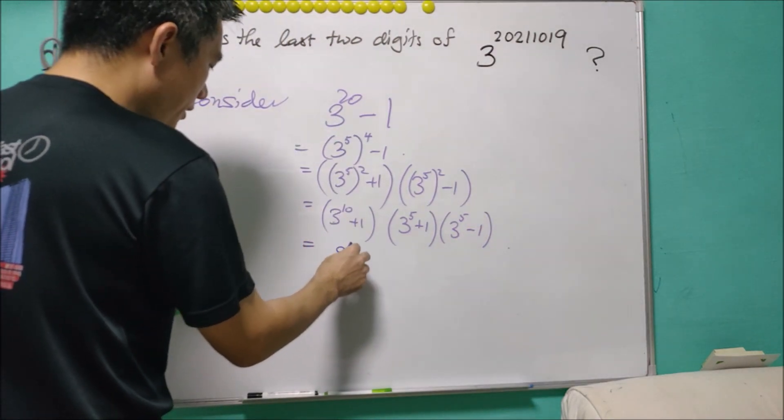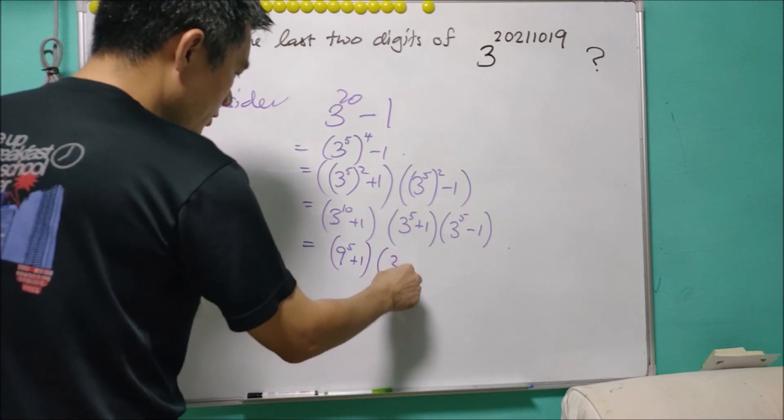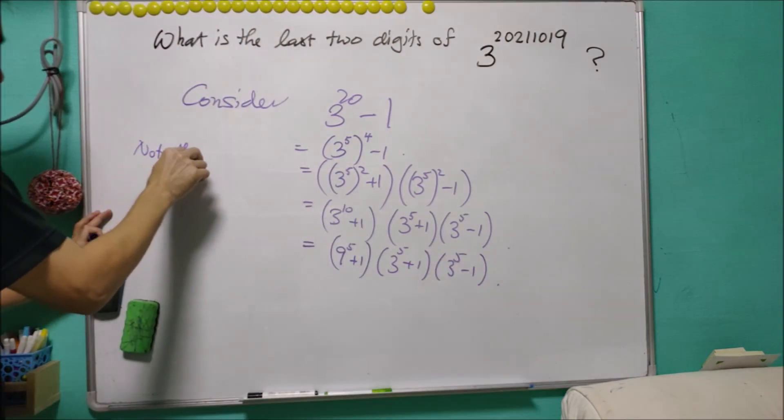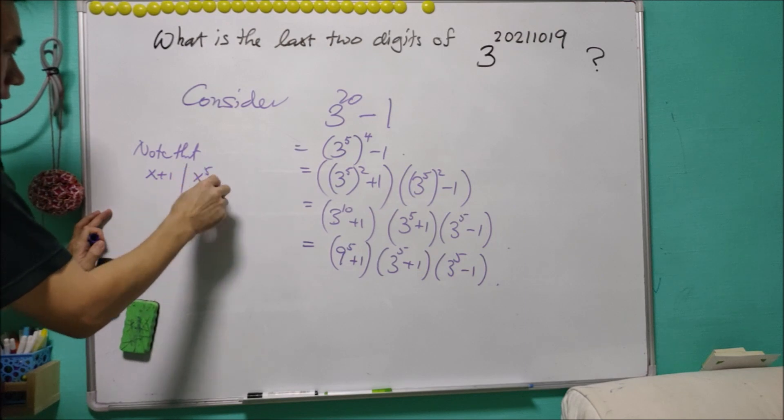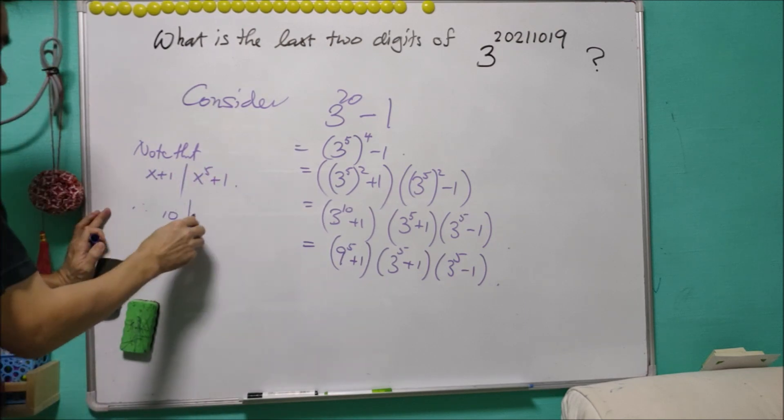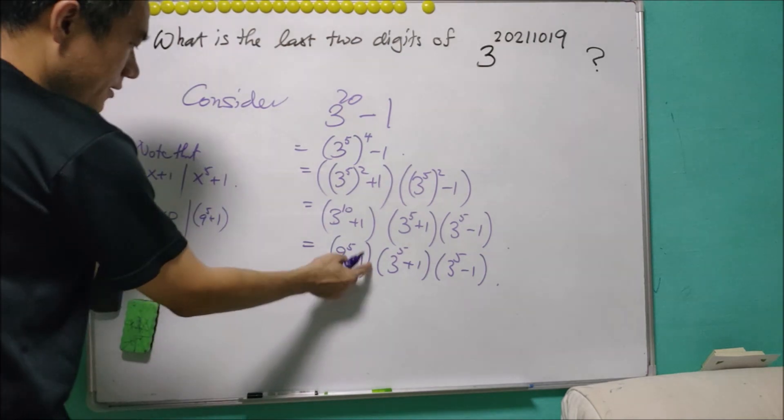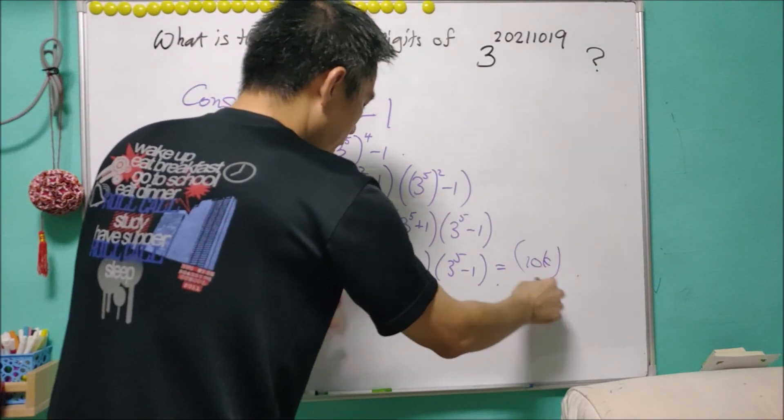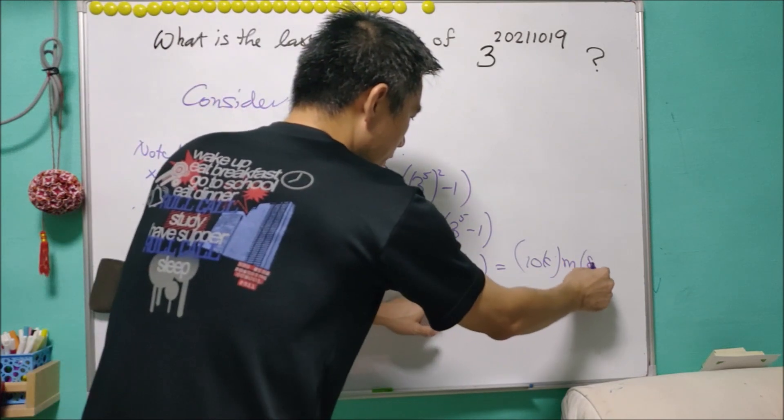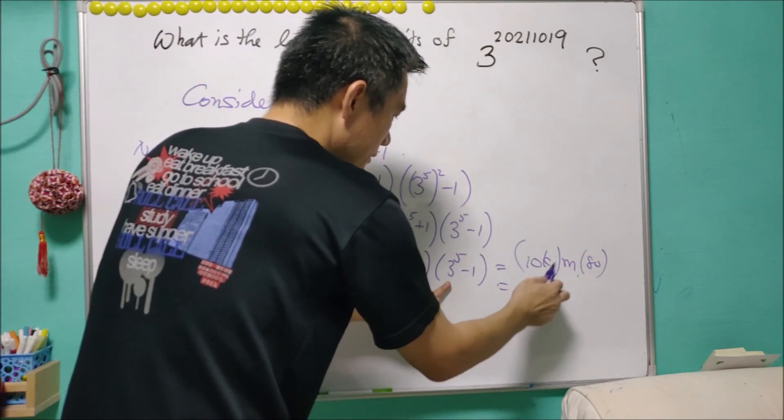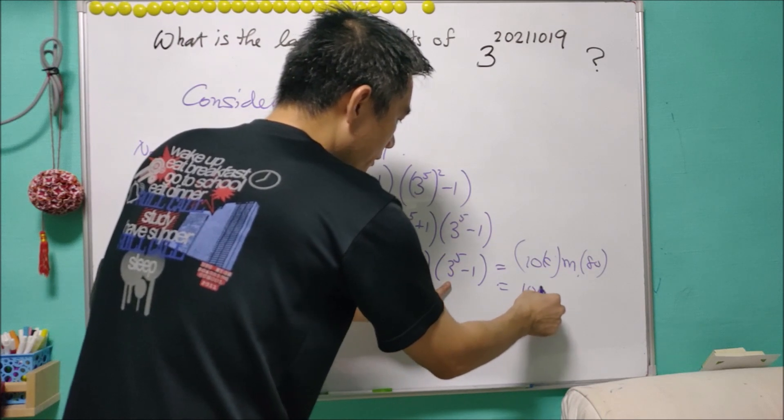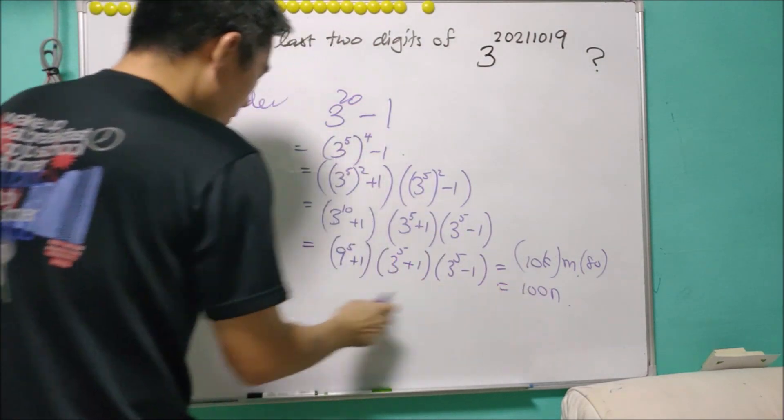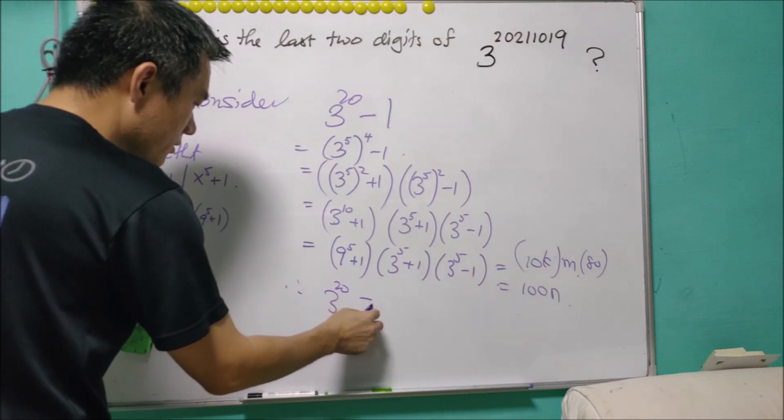Note that 3^10 equals 9^5 plus 1, and this is 3^5 plus 1 times 3^5 minus 1. Note that x plus 1 divides x to power 5 plus 1, so it means that 10 divides 9 to power 5 plus 1. This means that this is a multiple of 10. And this equals 80. So what we have here is actually a multiple of 100. So what we conclude here is that 3 to the power of 20 minus 1 is a multiple of 100, and therefore 3 to the power of 20 is congruent to 1 mod 100.